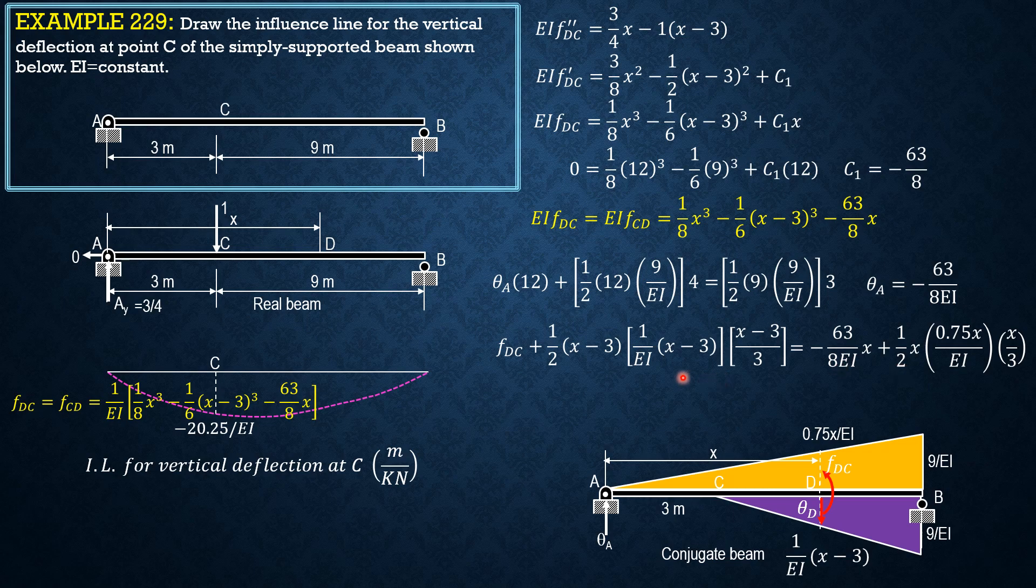Simplifying and transposing this to the right, it is the same as this. So F DC equals F CD equals 1 over EI of X cube over 8 minus 1 sixth quantity X minus 3 cube minus 63 over 8 times X.